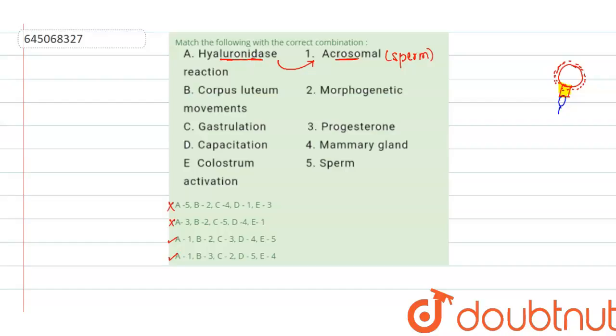Now let us see the second one, that is corpus luteum movements. We know that corpus luteum is formed after ovulation from the Graafian follicle. After ovulation, this Graafian follicle will give out the mature egg or the secondary oocyte stage, and it transforms into a corpus luteum which is responsible for the secretion of the hormone progesterone, and this is known as the pregnancy hormone.